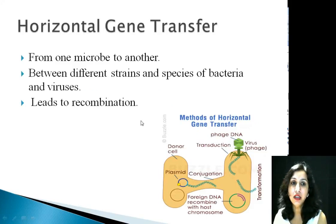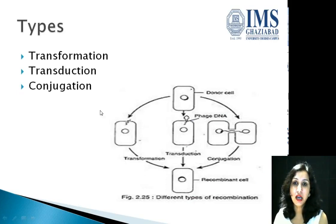In the case of horizontal gene transfer, DNA can be transferred from one microbe to another, or to different strains or species of bacteria and viruses, and recombination is formed. Horizontal gene transfer is basically of three types: transduction, conjugation, and transformation.